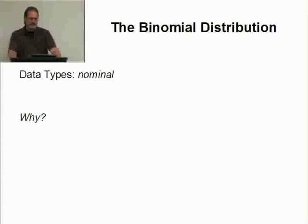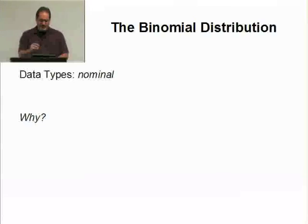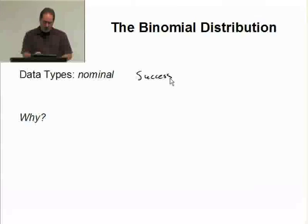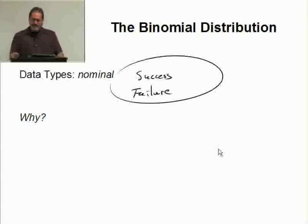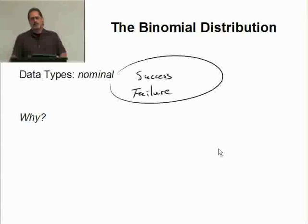The data type is nominal. The reason is because all you have is a success or a failure — those are labels. You're recording successes and failures. That wraps up the introduction of the binomial. In the next section, we're going to look at some examples, justify why they fit the binomial, and then start calculating some probabilities.